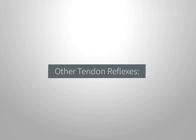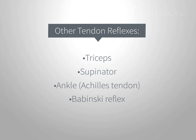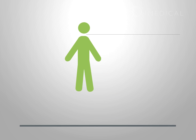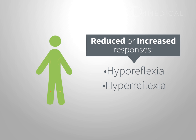Other tendon reflexes that could be examined are the triceps, supinator, ankle or Achilles tendons, and the Babinski reflex. A normal response involves an equal, appropriate response on both sides of the body. However, you could also get reduced or increased responses, known as hyporeflexia and hyperreflexia.